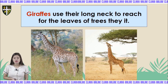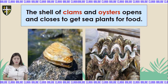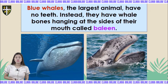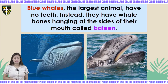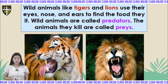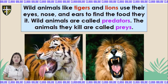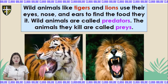Giraffes use their long neck to reach for leaves on tall trees. The shell of clams and oysters opens and closes to get sea plants for food. Blue whales are the largest animals — they don't have teeth; instead they have whalebone plates hanging at the sides of their mouth. Wild animals like tigers and lions use their eyes, nose, and ears to find food. They are called predators, and the animals they kill are called prey.